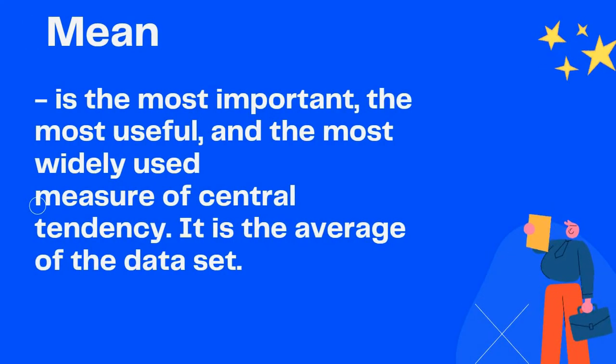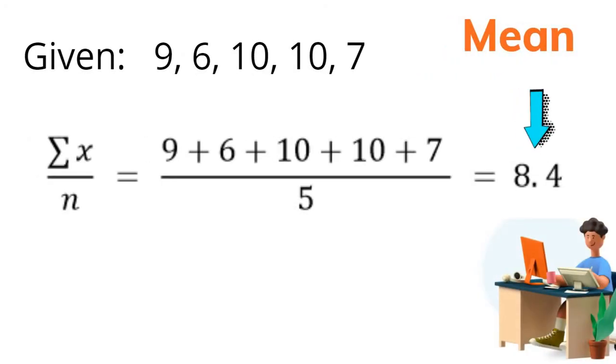It is the most important, the most useful, and the most widely used measure of central tendency. It is the average of the data set. So for example, if we have this ungrouped data given 9, 6, 10, 10, 7, to be able to find its mean,